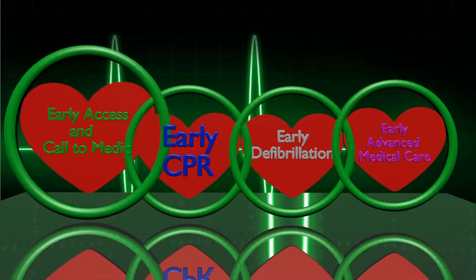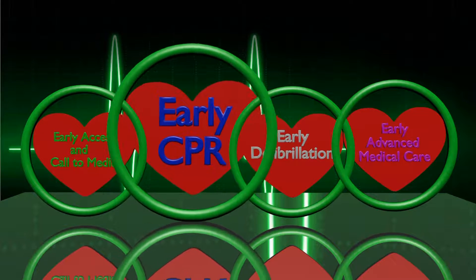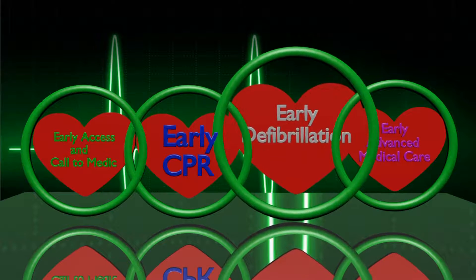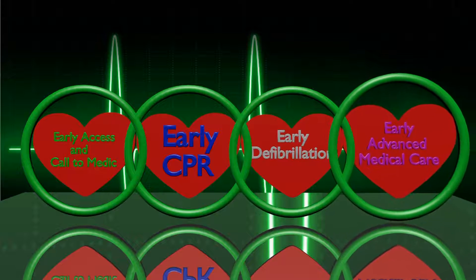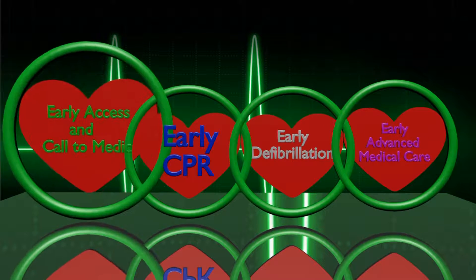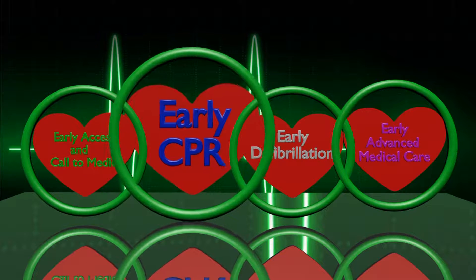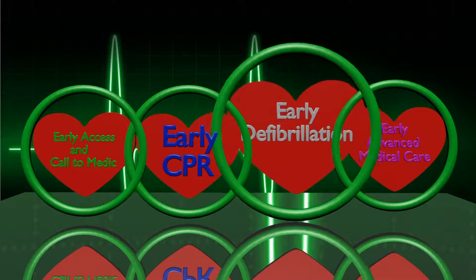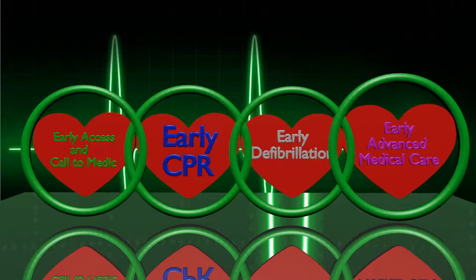Early access to the victim — recognition of cardiac arrest and calling for help as promptly as possible. Once cardiac arrest has been recognized, start CPR immediately. Ideally there should be no interruption in CPR before the ambulance arrives. Earlier defibrillation and appropriate post-resuscitation care in a hospital are essential to improve the recovery of the patient.